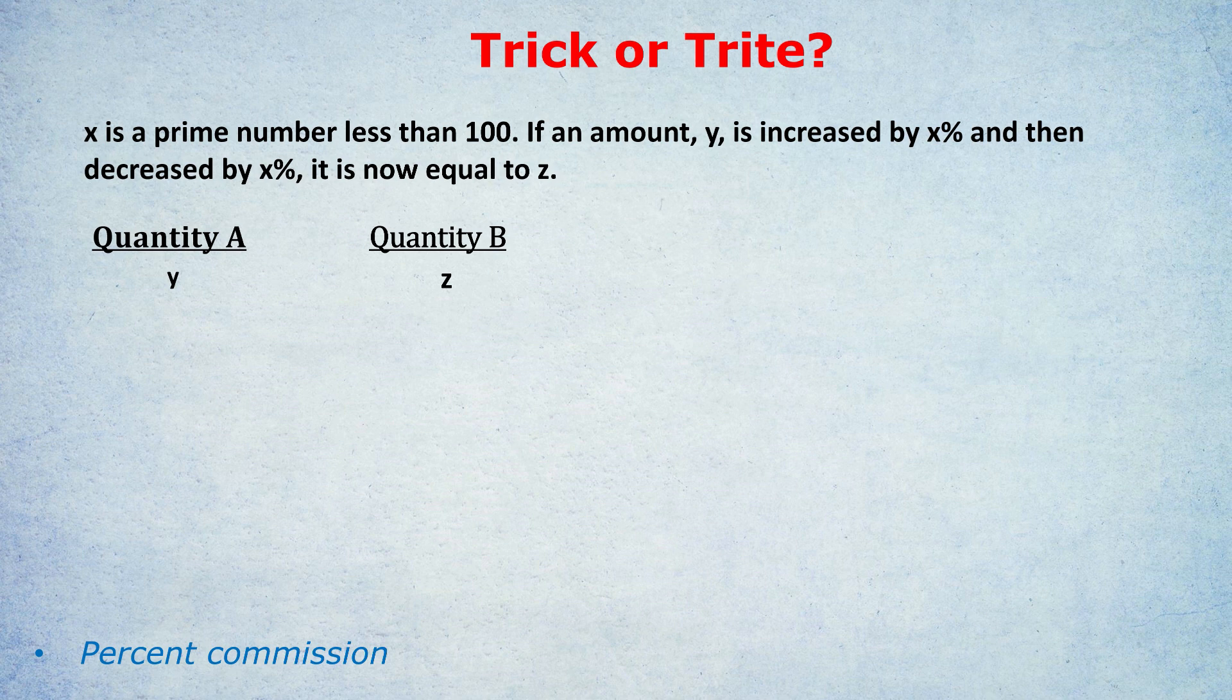That's just to say that x is positive, and x is not zero. Of course, if x was zero, and you increase by 0% and decrease by 0%, then nothing changes. The fact that we know it's a prime number does tell us that x is not zero. So some of you might have felt that the first sentence contained some sort of trap, but not particularly.